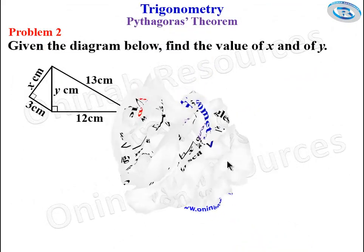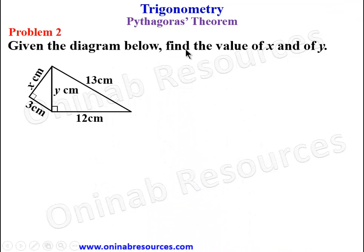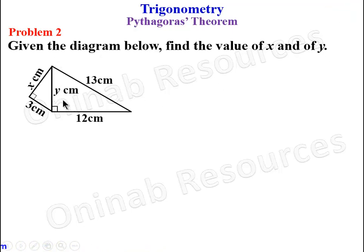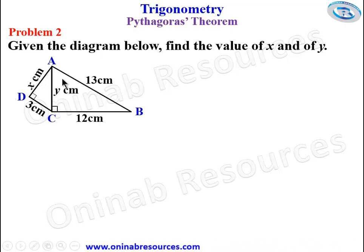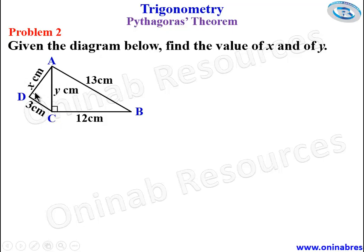We go to problem two: given the diagram below, find the value of X and Y. There are two right-angled triangles here. For easy referencing, I want to label the diagram A, B, C, and D. It is not possible to find X before Y, because we would have two unknowns. So we'll find the value of Y first before X.